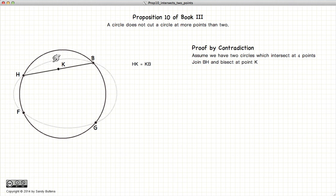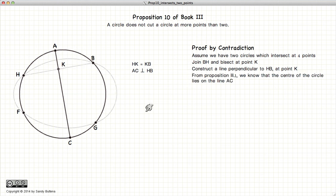Now the first thing we did was draw a line from H to B and bisected it at point K. Now we draw a line perpendicular to K and where it intersects the circles we call it AC. Now from Proposition 3.1, if we have a chord, a line that's bisected, that's perpendicular, then we know the center of the circle is somewhere along this line AC.